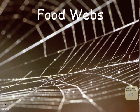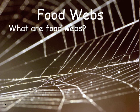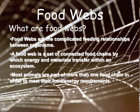Food webs — what are they? Food webs are a complicated feeding relationship between organisms. They are a bunch of food chains combined to create a food web in an ecosystem. Most animals need to be part of more than one food chain because they need more energy, especially in the higher trophic levels.